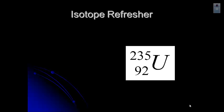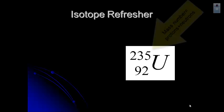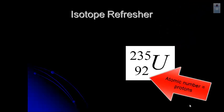So let's start off with a quick isotope refresher. Hopefully you remember what this isotope symbol means. But just as a reminder, the top number, 235, is the mass number, which is equal to the sum of the protons plus the neutrons in the atom. And the bottom number is the atomic number, which is the number at the top of the periodic table block, and that's equal to the number of protons.